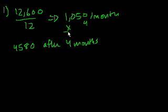Let's see how much they should have spent after four months. So after four months, they should have spent 1,050 times 4. That's 4,000. 4 times 50 is 200.